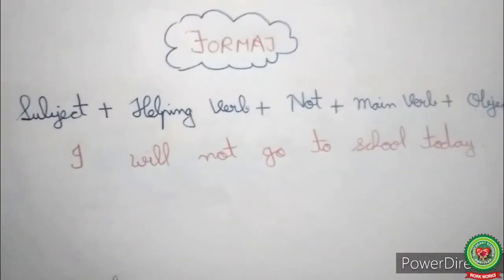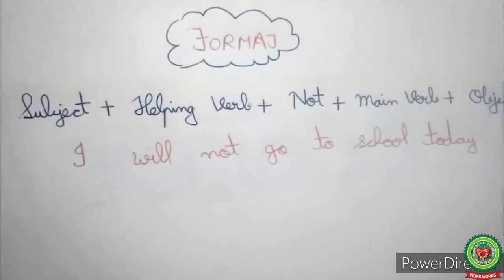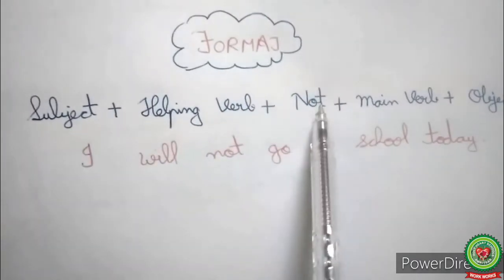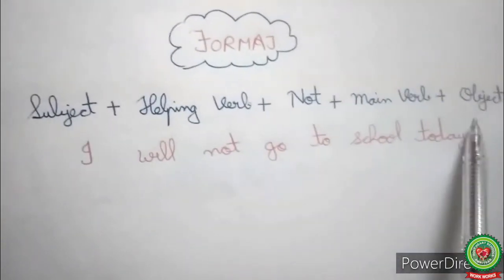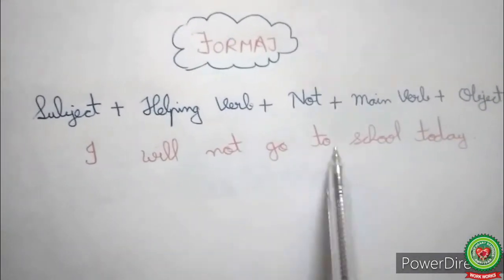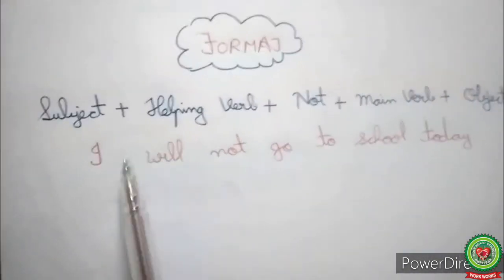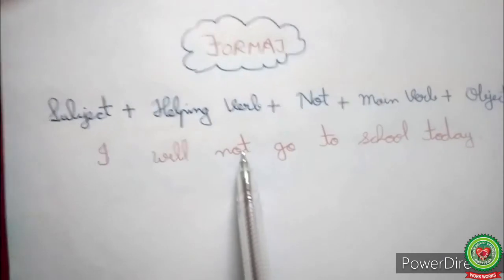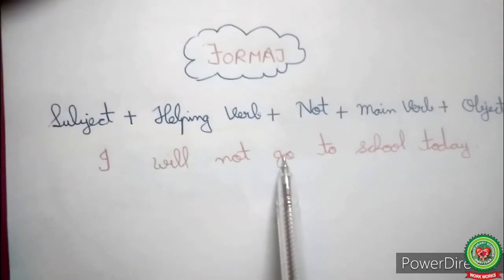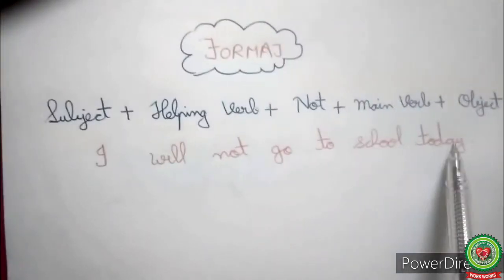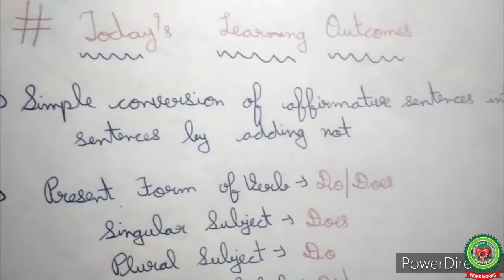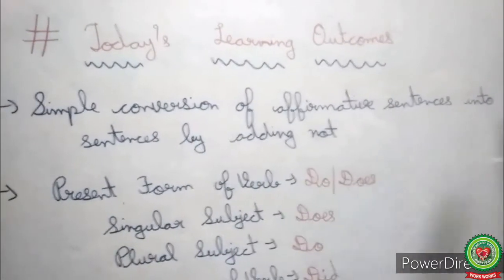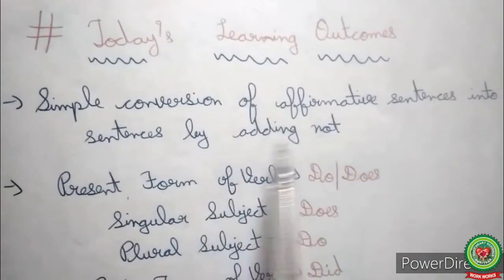Students, you also need to remember the format while changing an affirmative sentence into a negative: Subject + Helping Verb + Not + Main Verb + Object. For example: 'I will not go to school today.' Here, 'I' is the subject, 'will' is the helping verb, 'not' follows, 'go' is the main verb, and 'to school today' is the object. So today we have learned how to change an affirmative sentence into a negative sentence by simply adding 'not.'